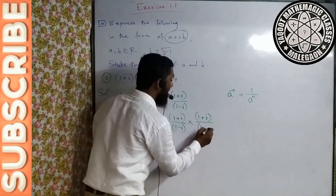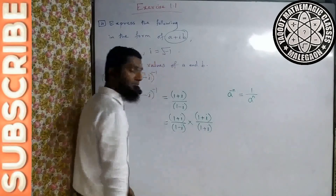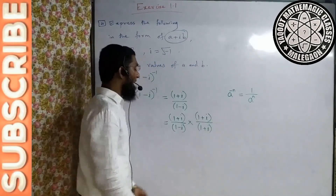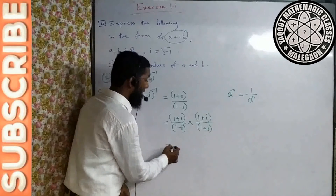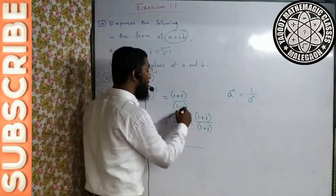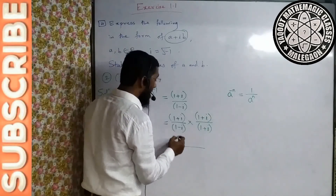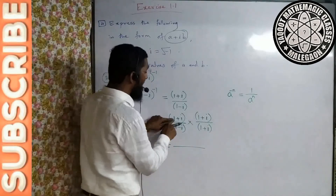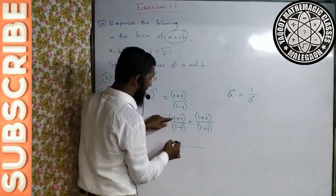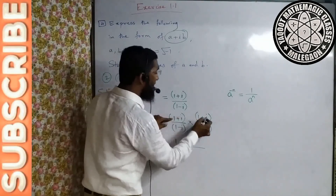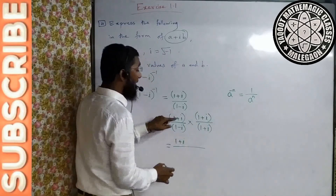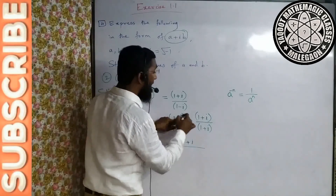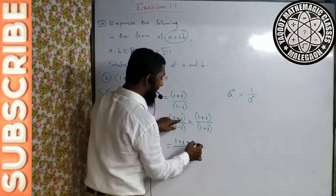Complex numbers ka division karne ke liye denominator ka conjugate leke multiply-divide karenge. (1 − i) ka conjugate (1 + i) hai, usi se multiply aur divide karenge. Numerator mein (1 + i) × (1 + i) hoga: 1×1 = 1, 1×i = i, i×1 = i, i×i = i².